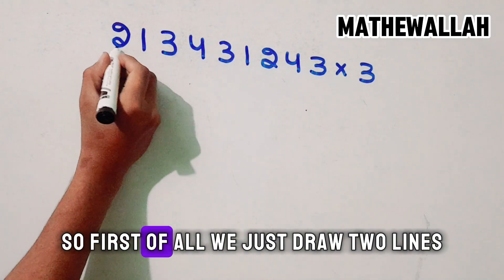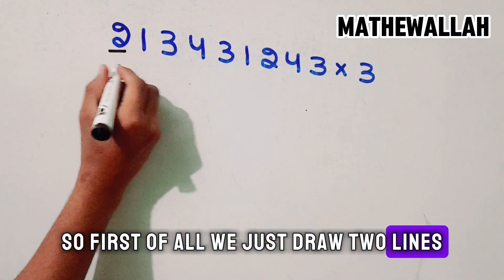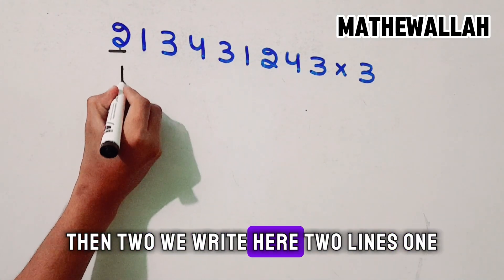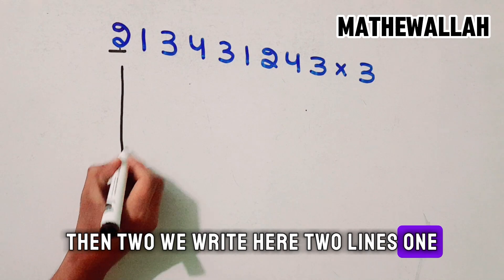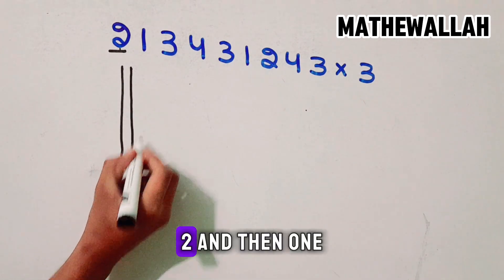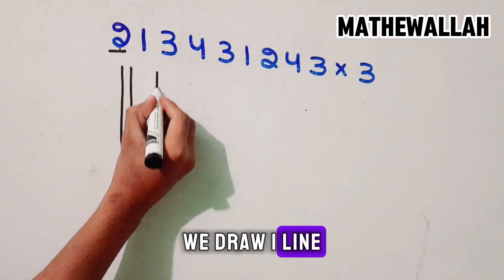First of all, we just draw 2 lines. We write here 2 lines: 1, 2. And then 1 — we draw 1 line.